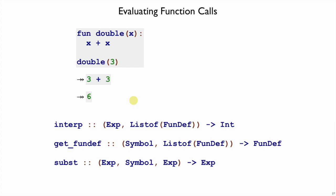So let's go look at how we implement these pieces. I will focus on the simpler helper functions, get_fundef and subst, and then we'll come back to interp.